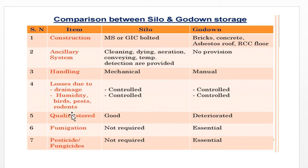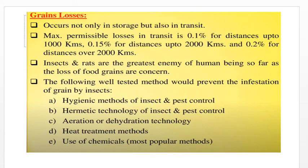Handling in silos is done mechanically, whereas in godowns it is done manually. Losses due to damage, humidity, pests, and rodents can be controlled in both cases. Quality storage in silos is good, whereas in godowns it deteriorates. Fumigation is not required in silos but is essential in godowns. Pesticide and fungicide use is also not required for silos but essential for godowns. Overall, silos are always better than godown storage.